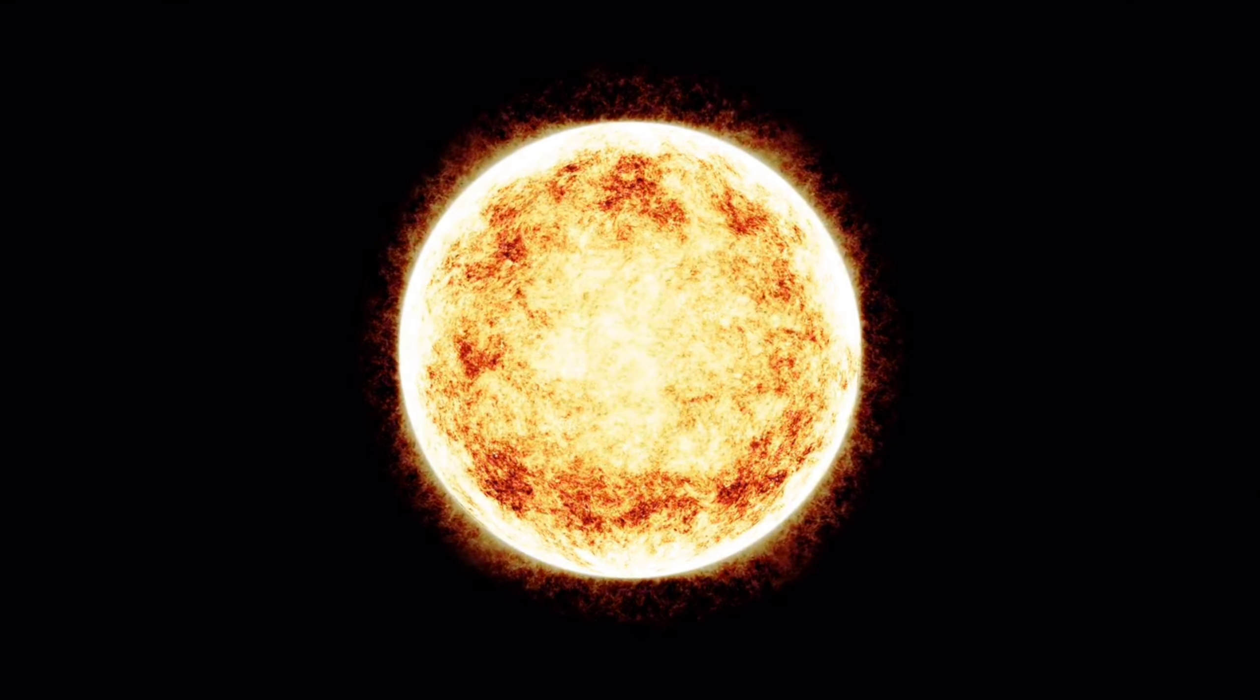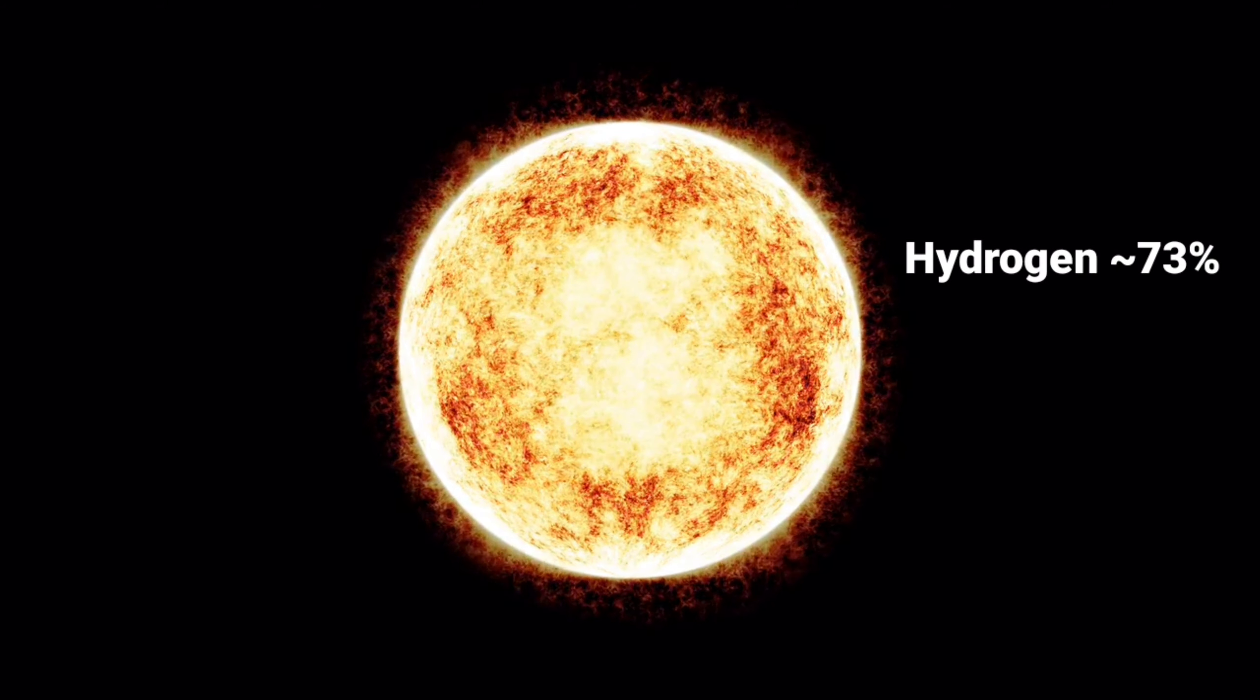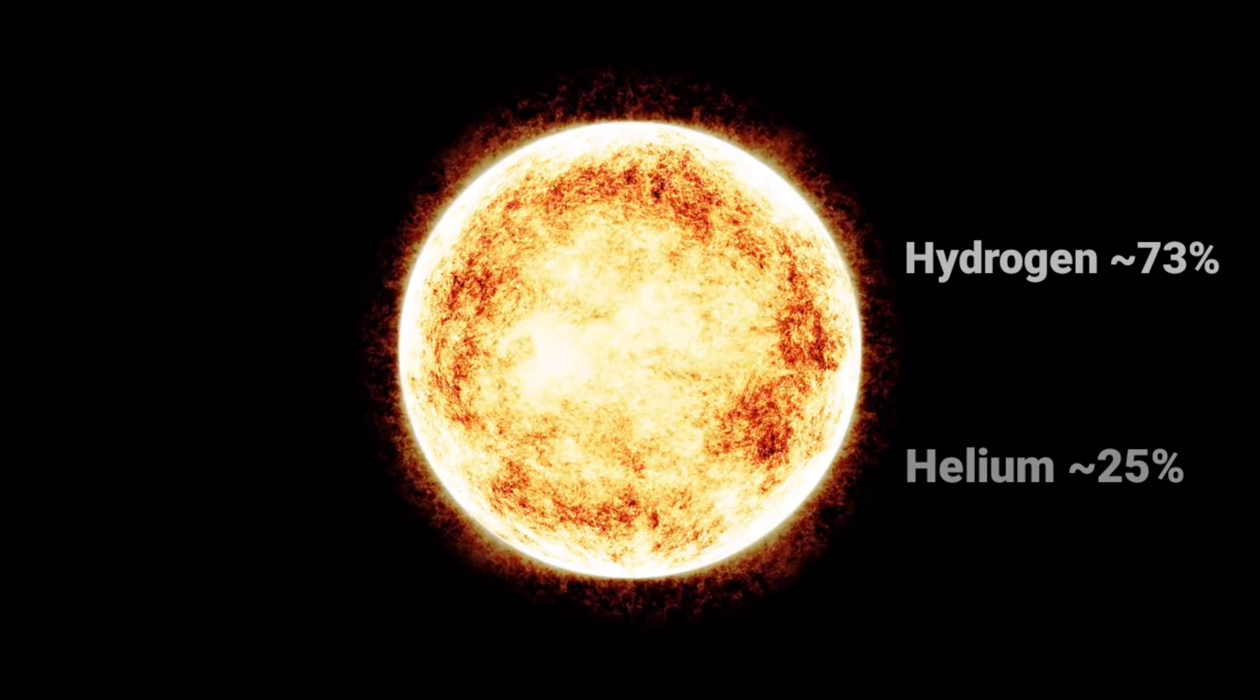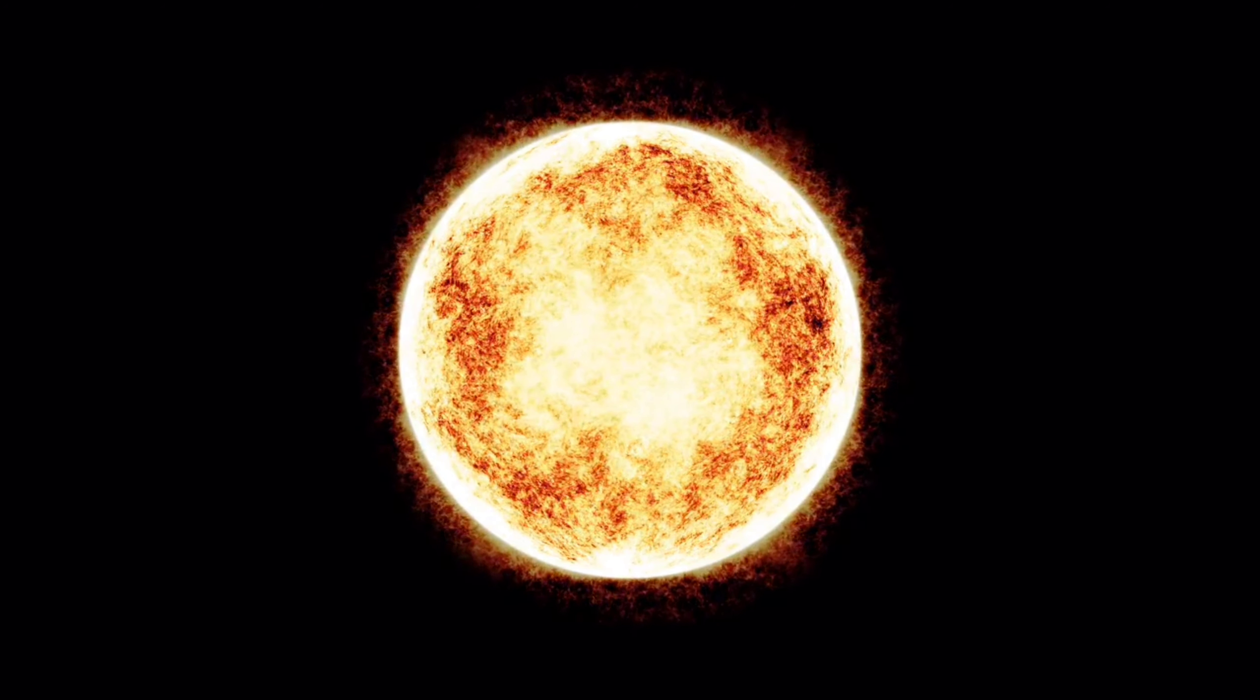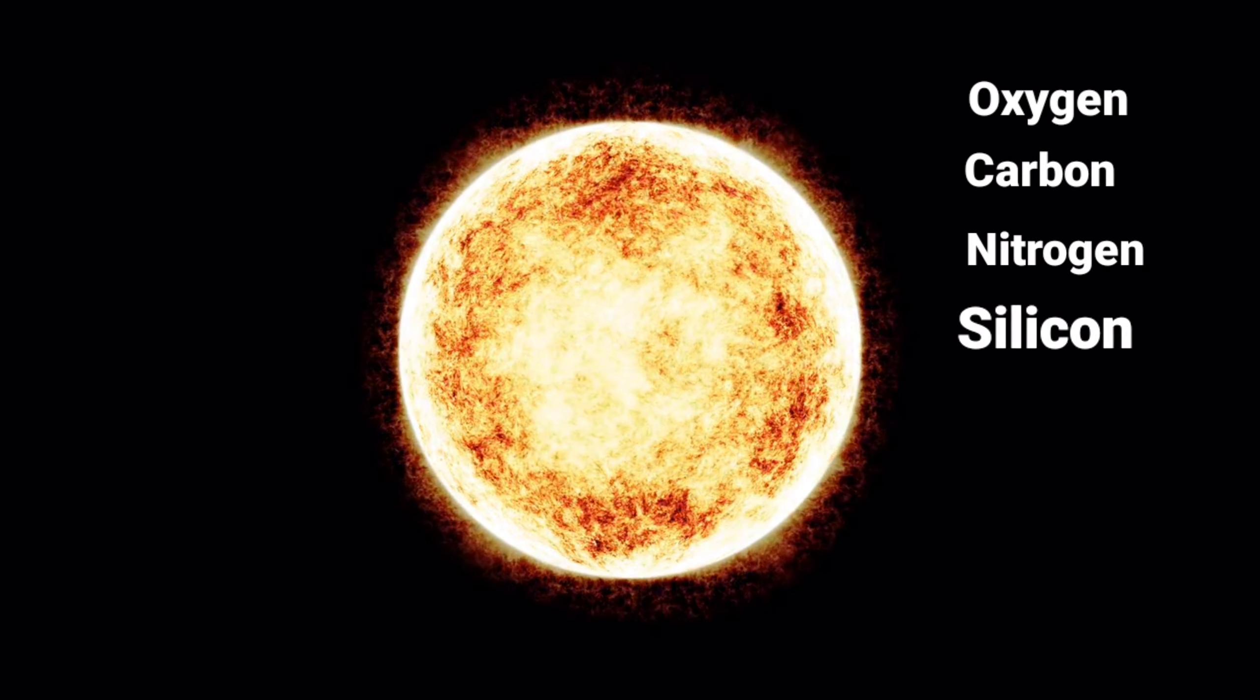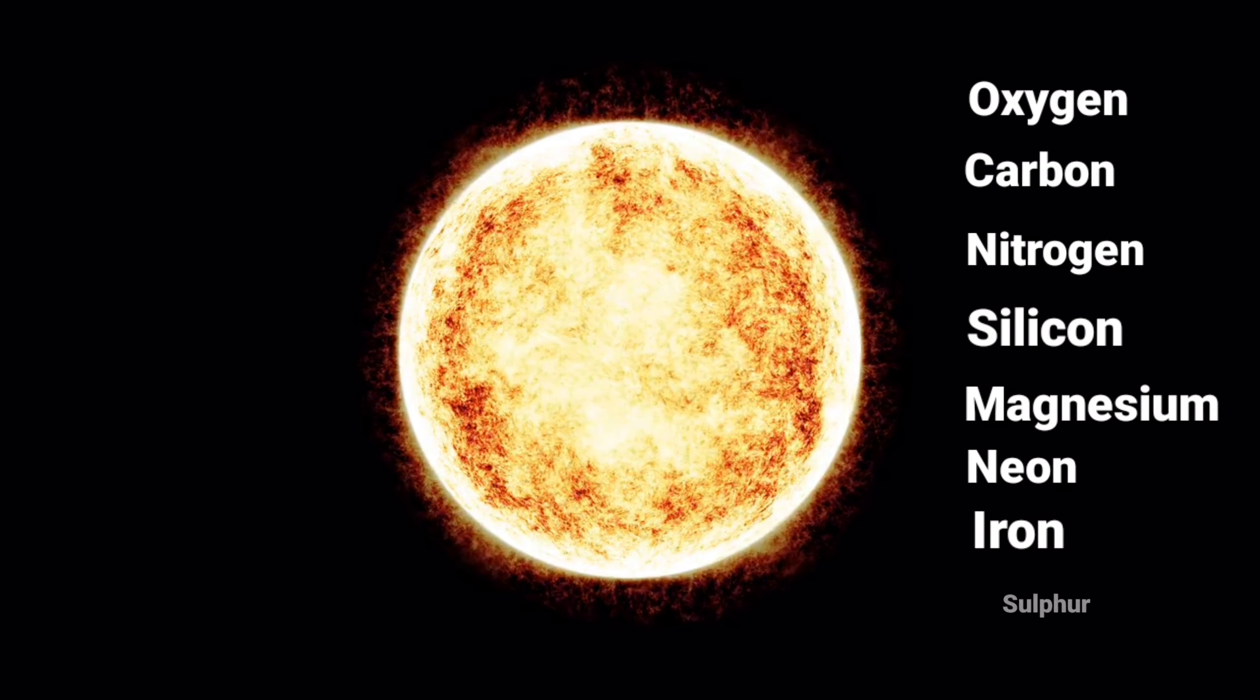The Sun was also formed containing elements like hydrogen of about 73%, helium of about 25%, and small quantities of other elements including oxygen, carbon, nitrogen, silicon, magnesium, neon, iron and sulfur.